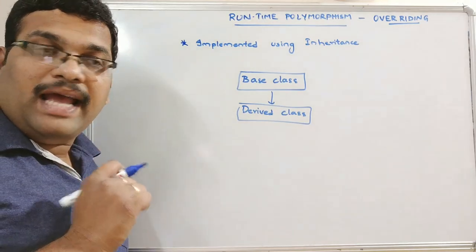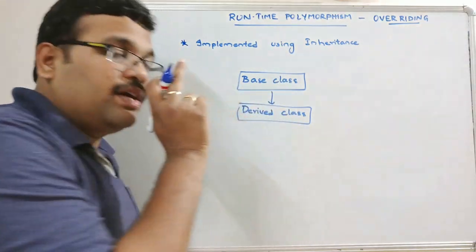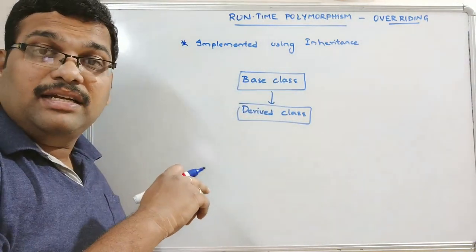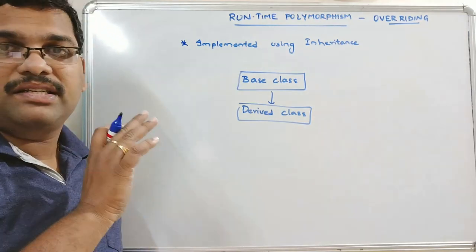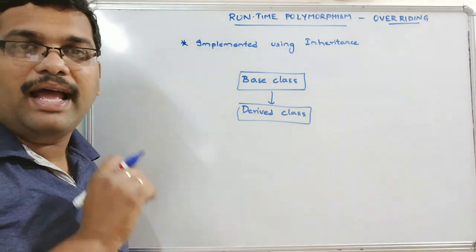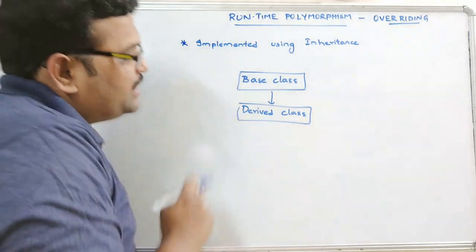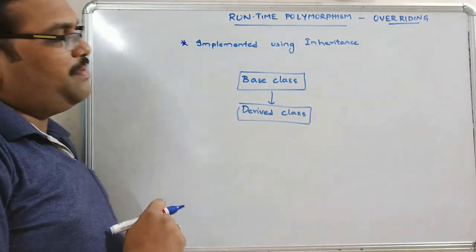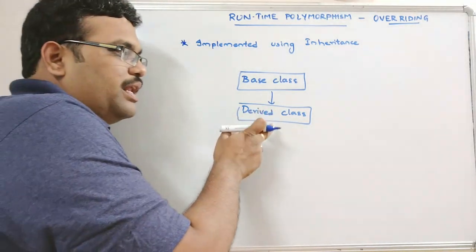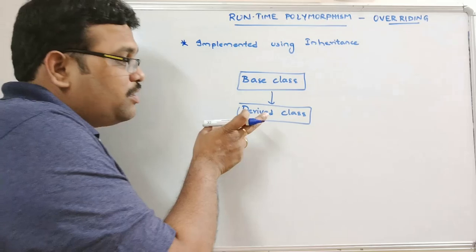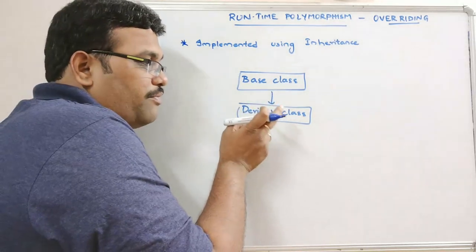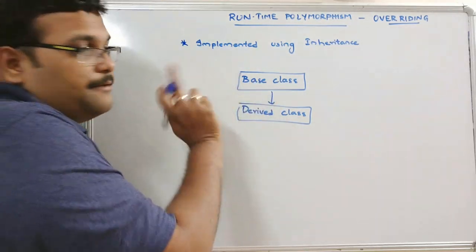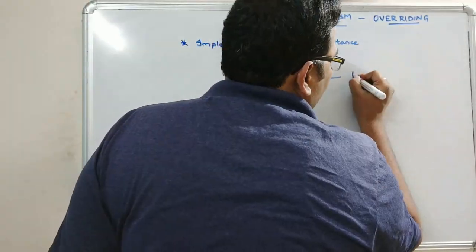In order to access the functions of a class, we first have to create an object for the class and through that object access the functions. In inheritance, by creating an object for the derived class, we can access the methods and variables of both the derived class and the base class.